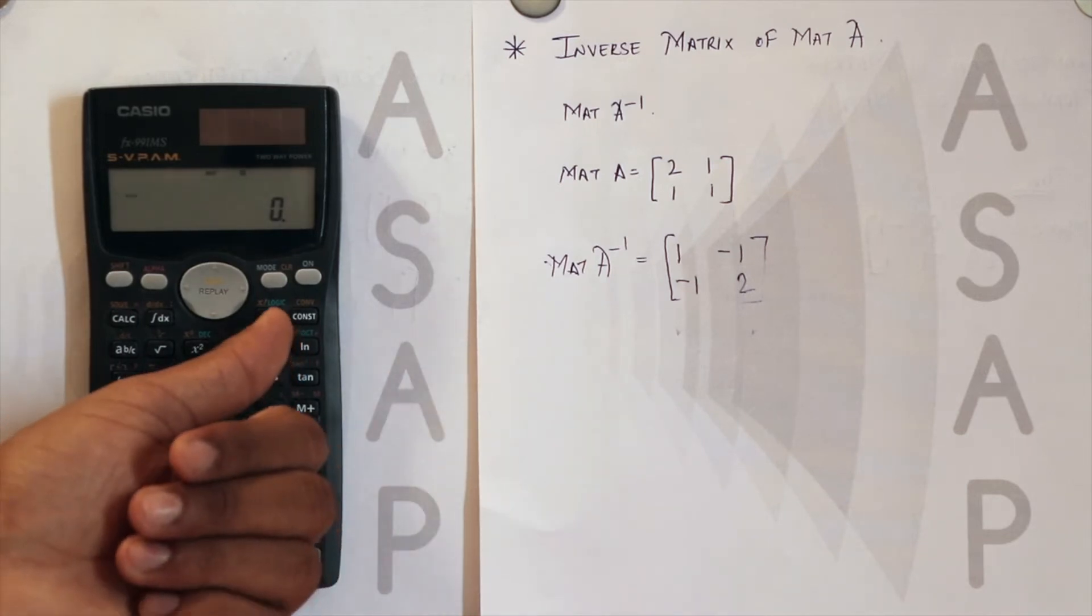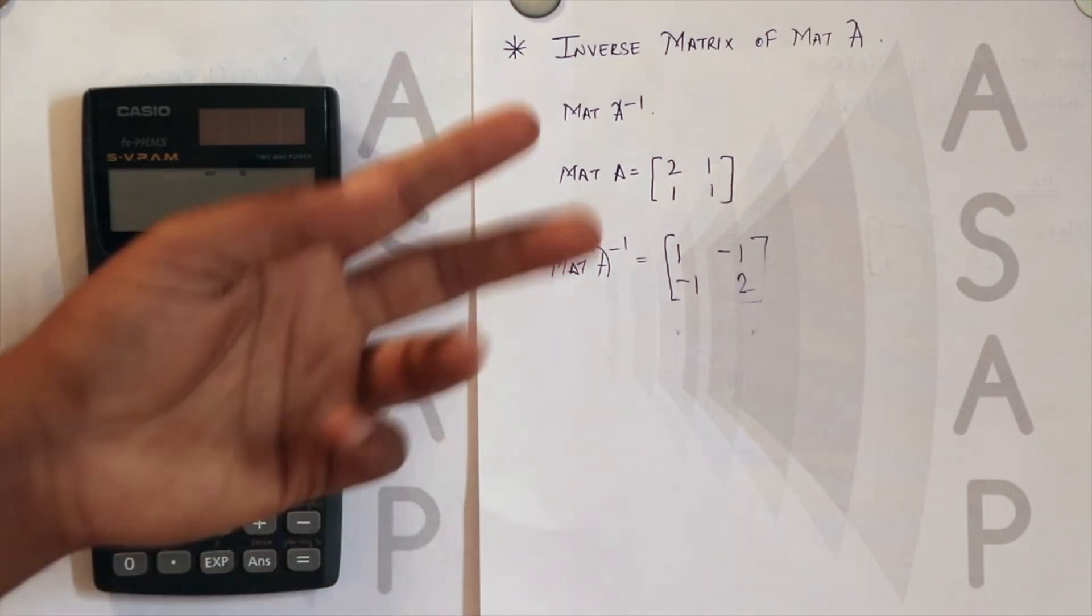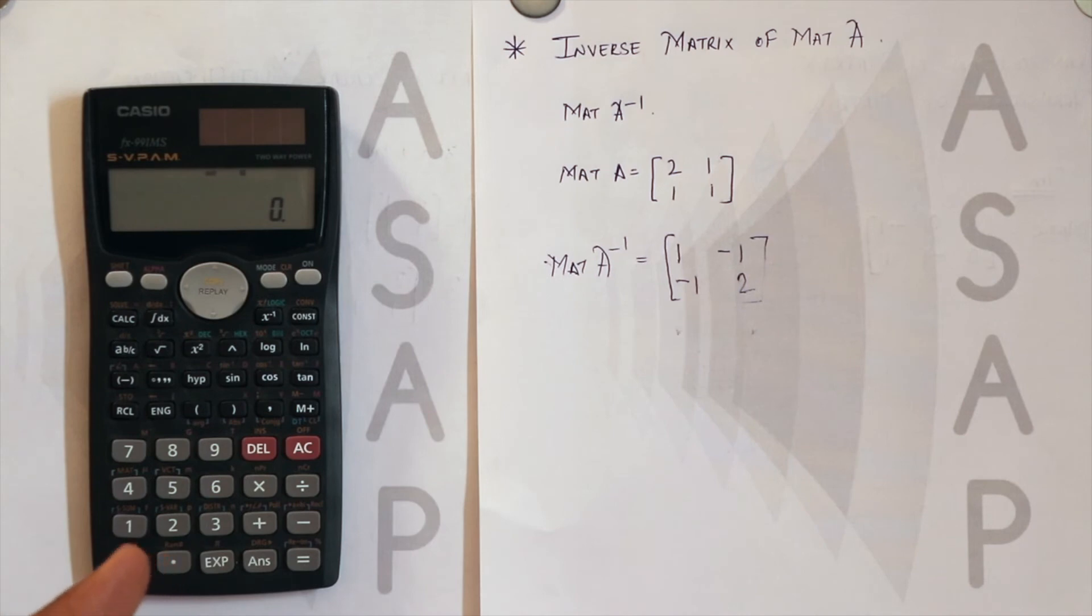But if you do it manually on pen and paper, it may take 3 to 4 steps to find the inverse of that matrix.